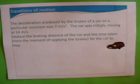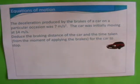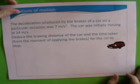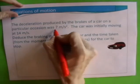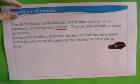So we're going to show you a few examples of this. Feel free to stop the video and do your own answer. This question: the deceleration produced by the brakes of a car on a particular occasion is 7 meters per second squared.